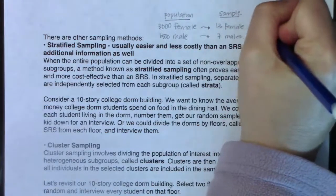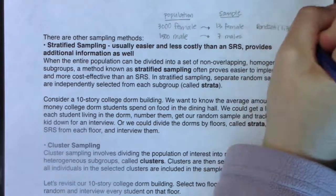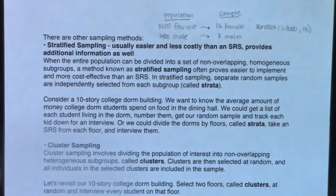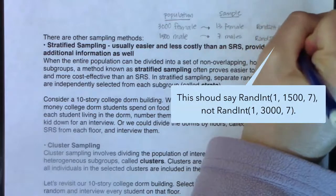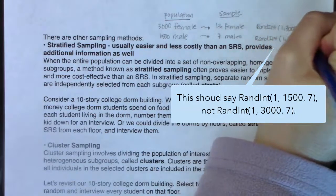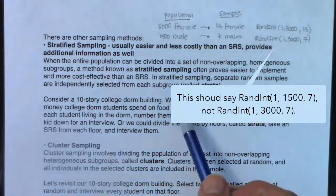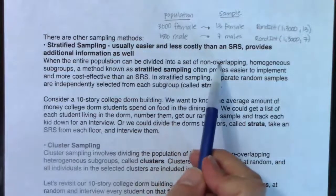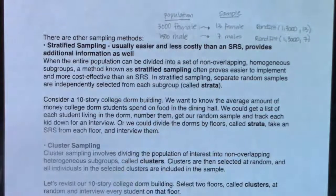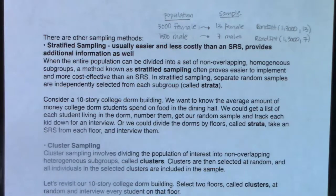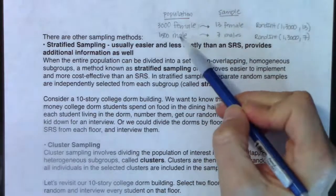So if this is what I want in my sample, then what I want to do is get a little SRS from inside this strata. If I was using my calculator, I would do random int 1 comma 3000 comma 13 and make sure I had no repeats. For the males, I would do random int 1 comma 1500 comma 7, and that's how I could get my stratified random sample.